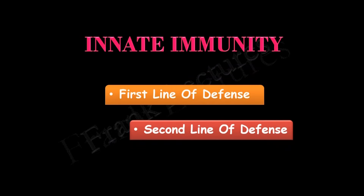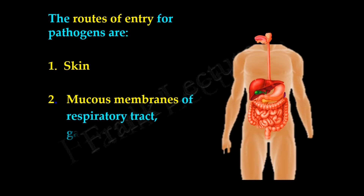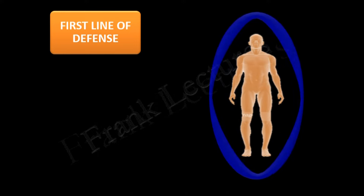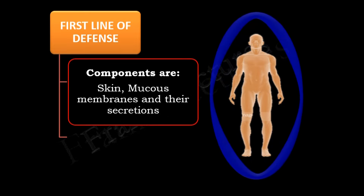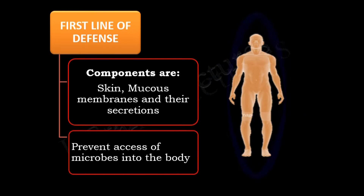Innate immunity forms the first line of defense and second line of defense. The routes of entry for pathogens into the human body are skin and mucous membranes of the respiratory tract, gastrointestinal tract, urinary tract, and reproductive tract. The first line of defense provides physical and chemical barriers to invading pathogens. Its components — skin and mucous membranes — secrete antimicrobial chemicals that prevent entry of microbes into the body.